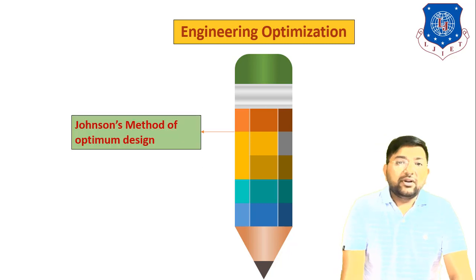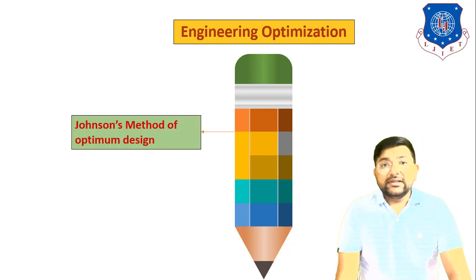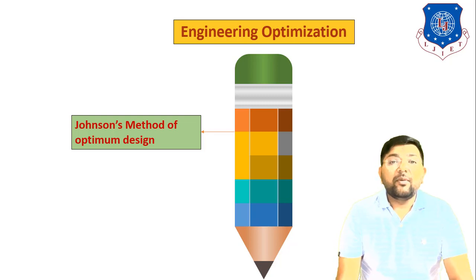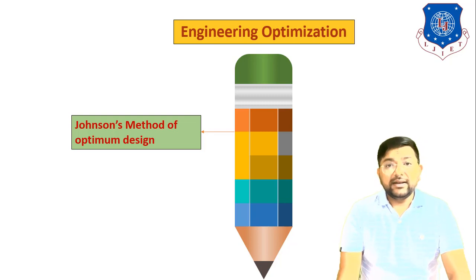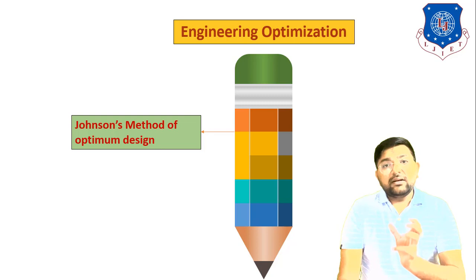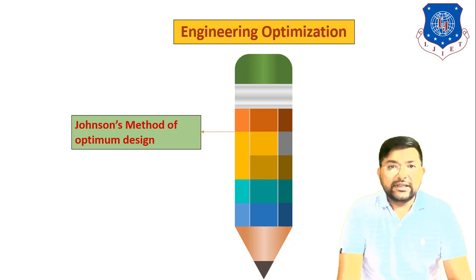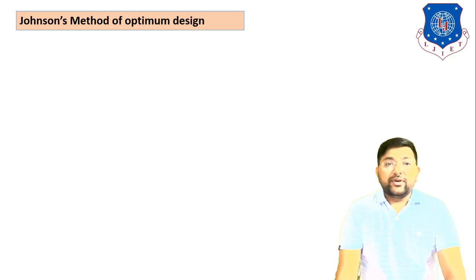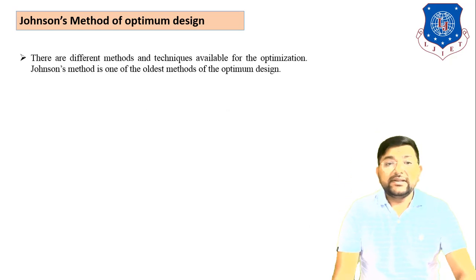In today's session we will discuss one method of optimization. This method is called the Johnson Method of Optimum Design — how we can design using the Johnson Method.